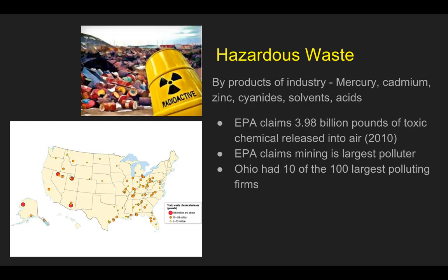Hazardous waste — these are byproducts of industry. Things like mercury, cadmium, zinc, cyanide, solvents, and acids. As industry creates their products, they have lots of dangerous and toxic byproducts. The EPA claims that 3.98 billion pounds of toxic chemicals are released into the air per year as of 2010. The EPA also claims that mining is the largest polluter — when you're mining, you're releasing tons of toxic substances.